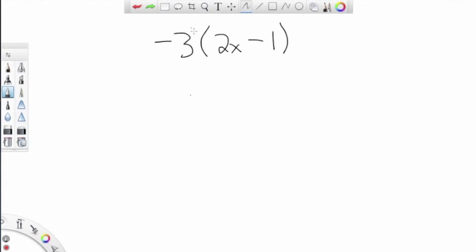Another common mistake students make is on a problem like this. I'm going to do it incorrectly, and I want you to see if you can find the mistake. Negative 3 times 2x is negative 6x, and negative 3 times 1 is negative 3.